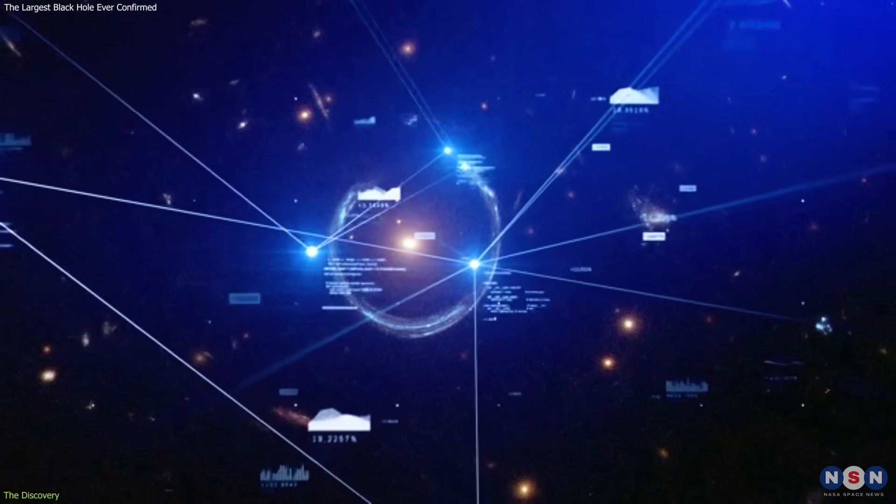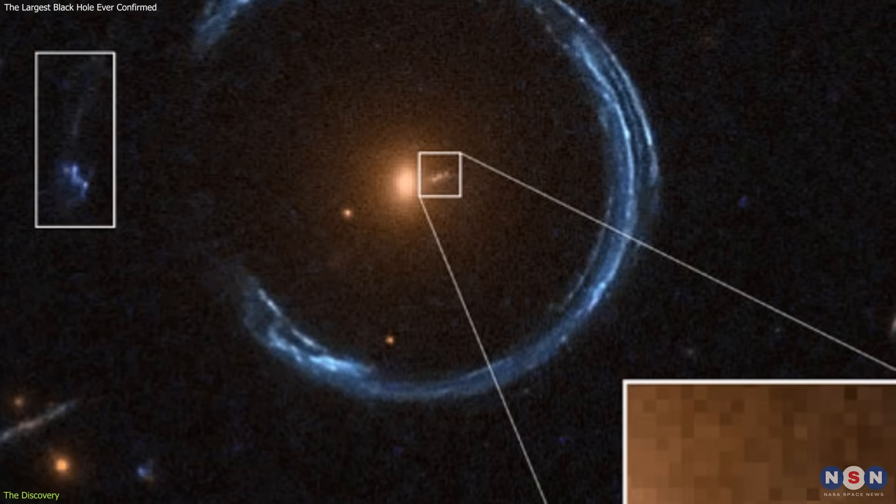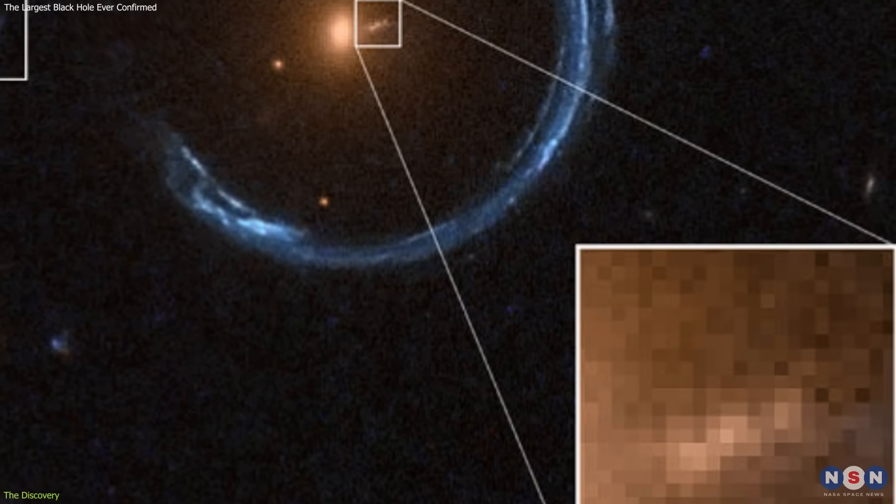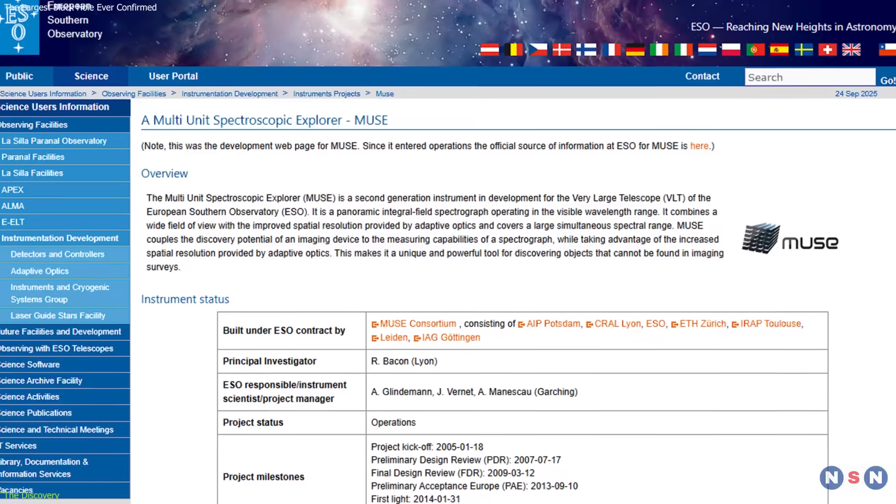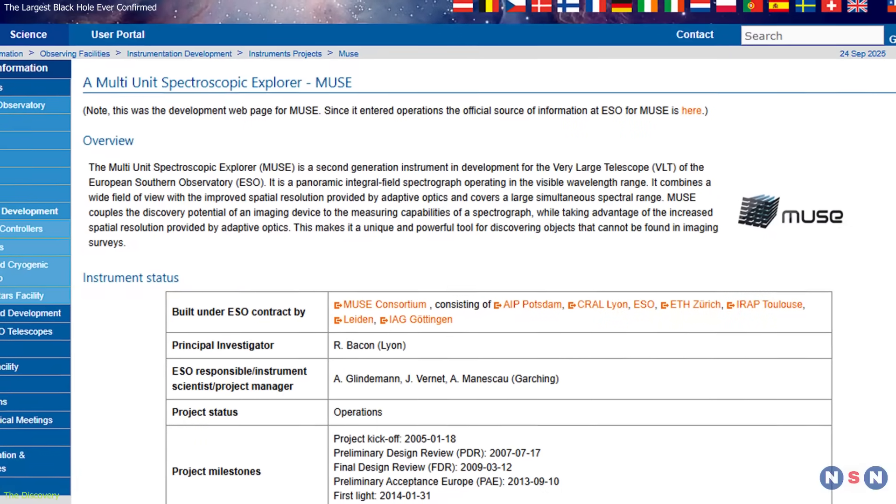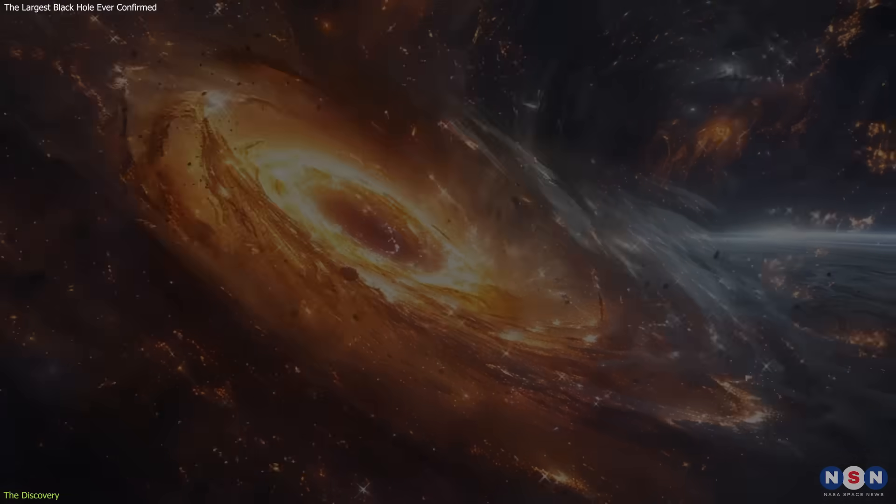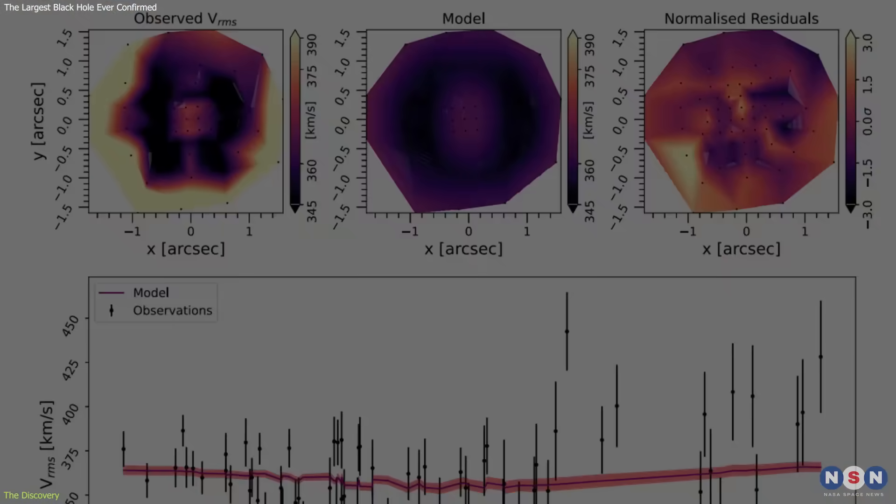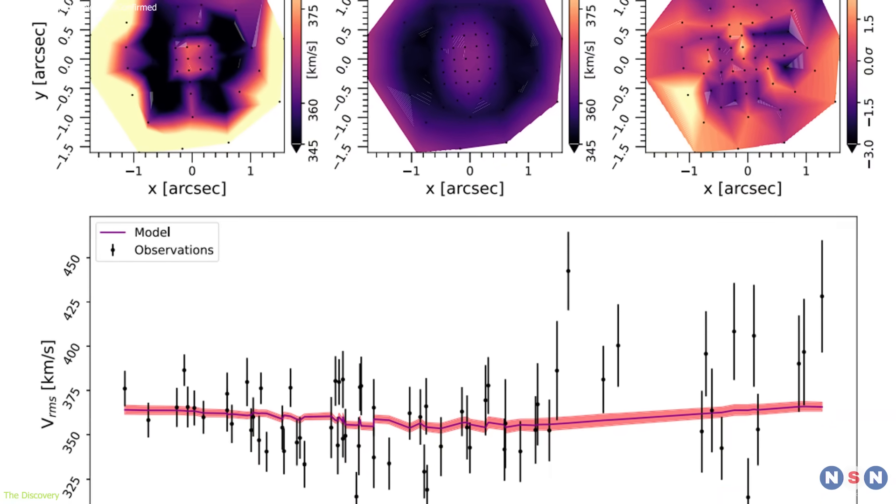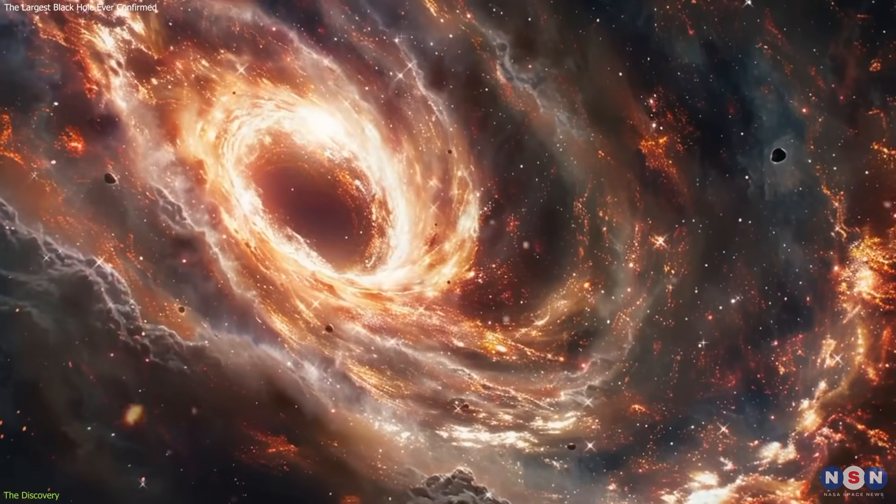But as they analyzed the data, they found something even more remarkable—signs of an ultramassive black hole at its center. To measure it, they combined two approaches. First, using the Multi-Unit Spectroscopic Explorer instrument on the Very Large Telescope, they studied the motion of stars. Near the galaxy's center, stars were moving at nearly 400 kilometers per second, indicating the presence of a powerful gravitational source.